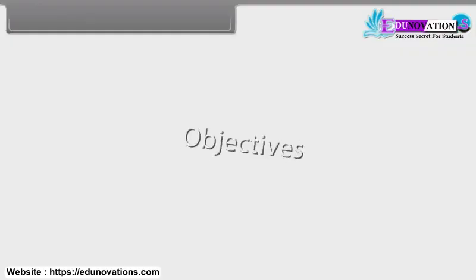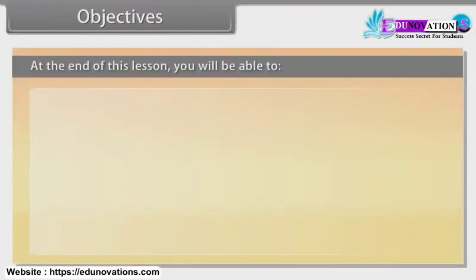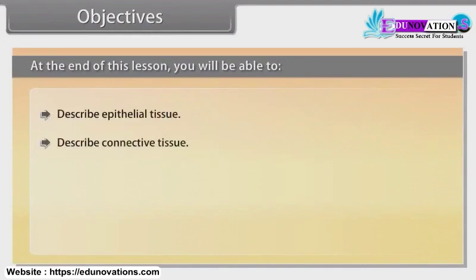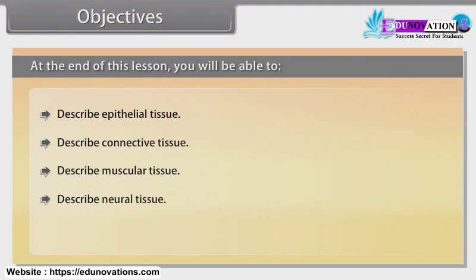Objectives. At the end of this lesson, you will be able to: describe epithelial tissue, describe connective tissue, describe muscular tissue, describe neural tissue, and describe organ and organ system.